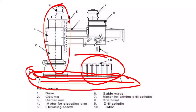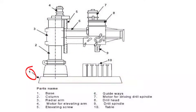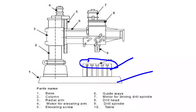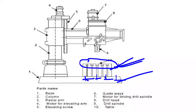In some machines, the base serves as a table, so T-slots are provided on the base. You can see that T-slots are provided on the work table. But in some cases, if the workpiece is very large, the work table cannot accommodate it, so the workpiece is kept on the base itself. In that case, T-slots are provided on the base only.